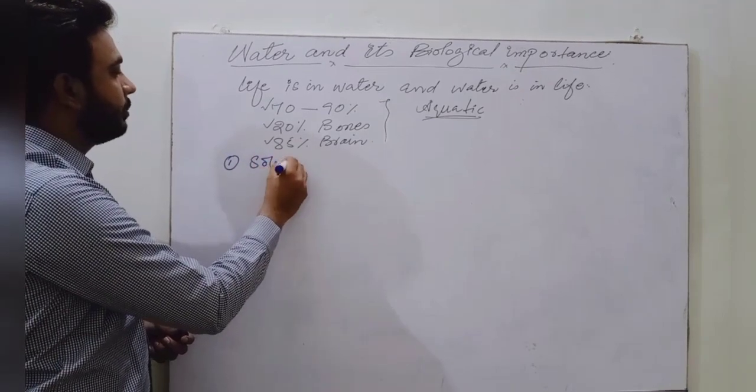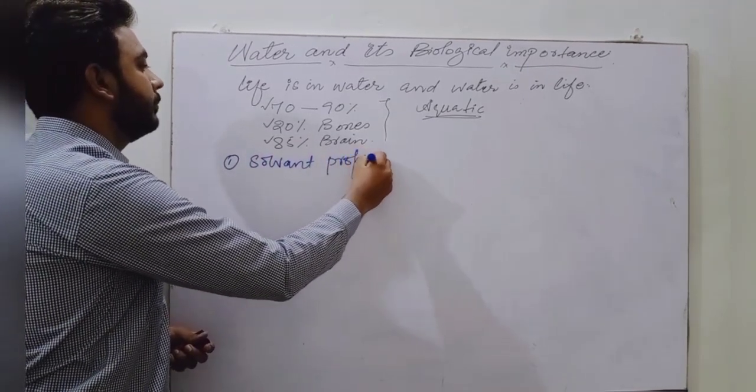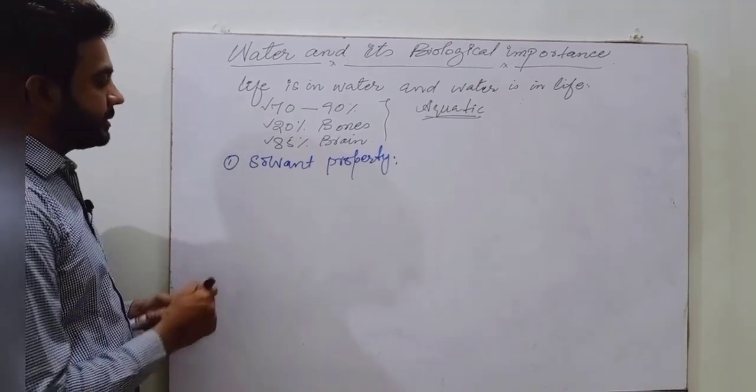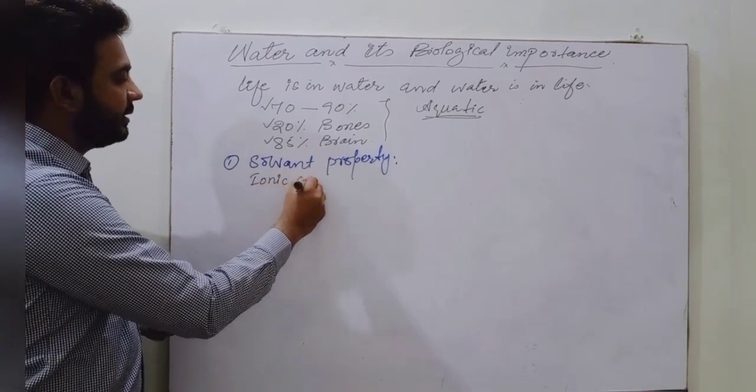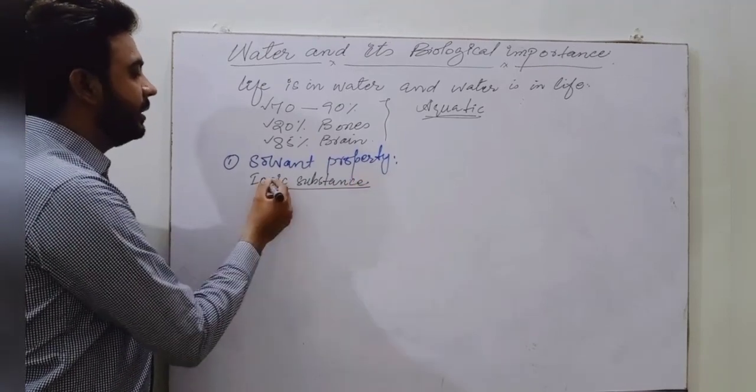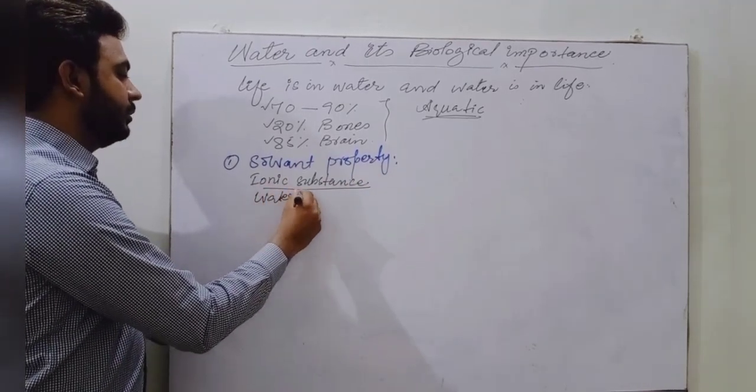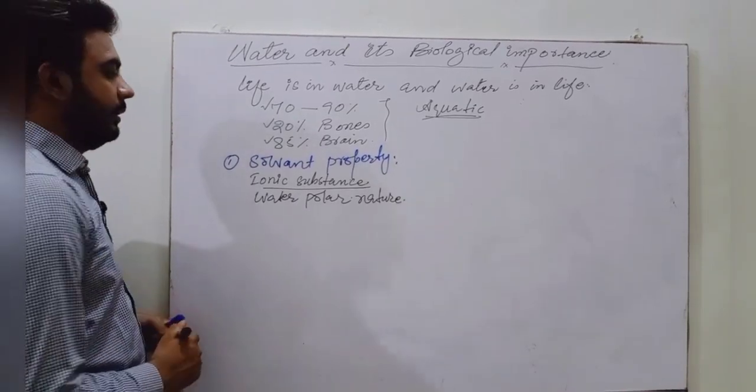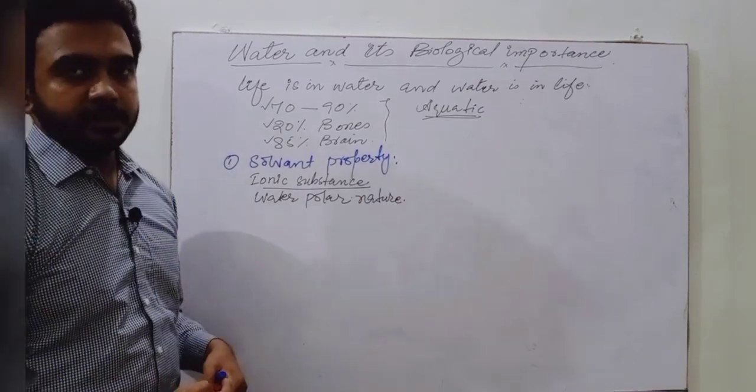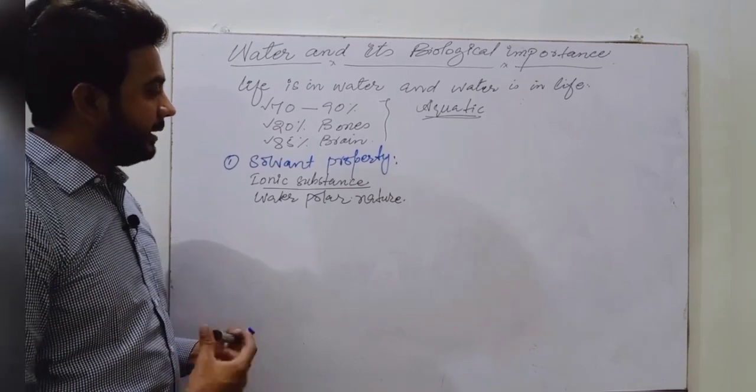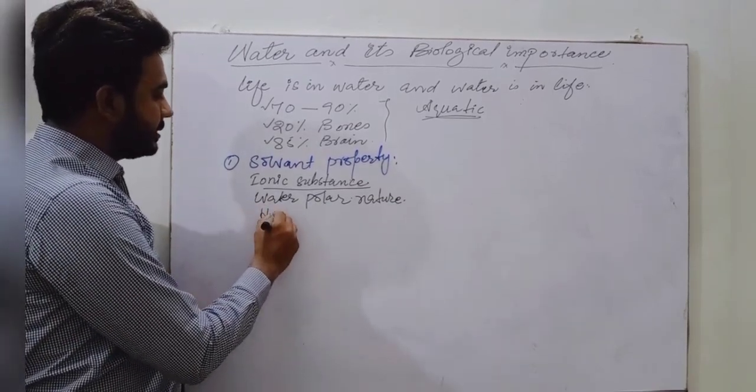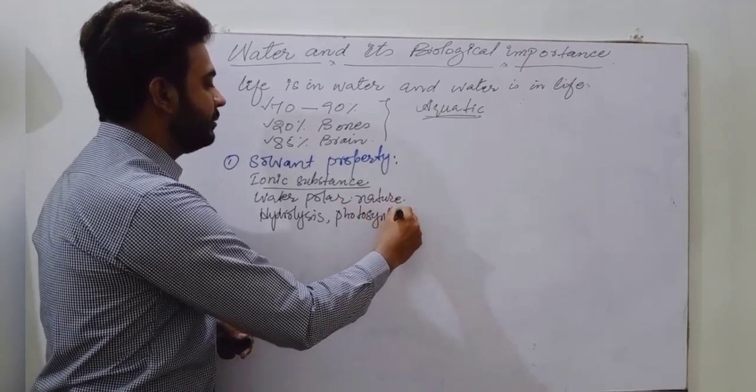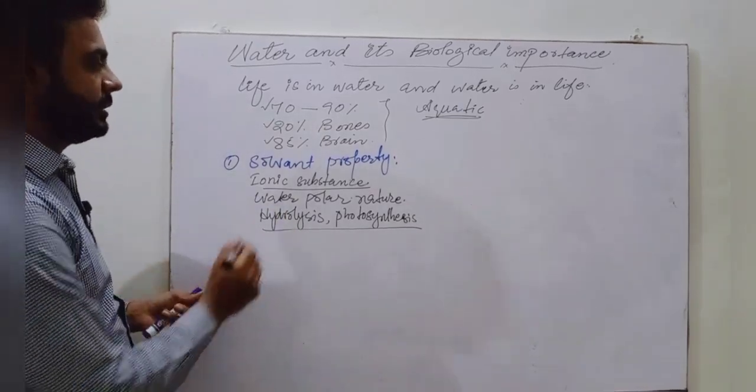Number one, the solvent property. Water is one of the best solvent in living system. Any type of substance, especially ionic substance, gets dissolved into the water because of its polar nature. Because of water's polar nature, most of the substances dissolve in water. It provides basic medium for many reactions inside the living system and also takes directly part in some reactions like hydrolysis and photosynthesis as a raw material.